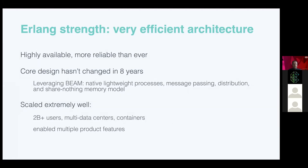If I were to highlight what works so well with Erlang, it comes down to two things. The first is extremely efficient architecture that Erlang enables. For our domain — scalable network services — we see systems written in C++, Java, and more recently Rust and Go. In our experience, Erlang's lightweight processes, message passing, distribution, and share-nothing memory model offer massive advantages over other stacks.